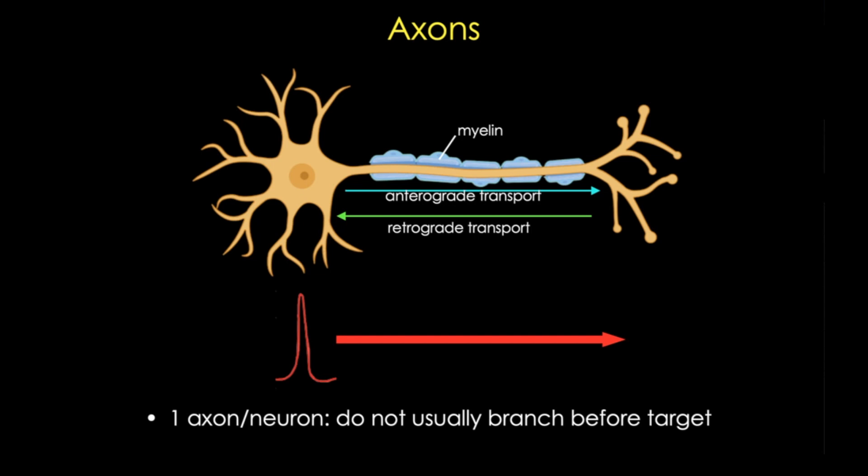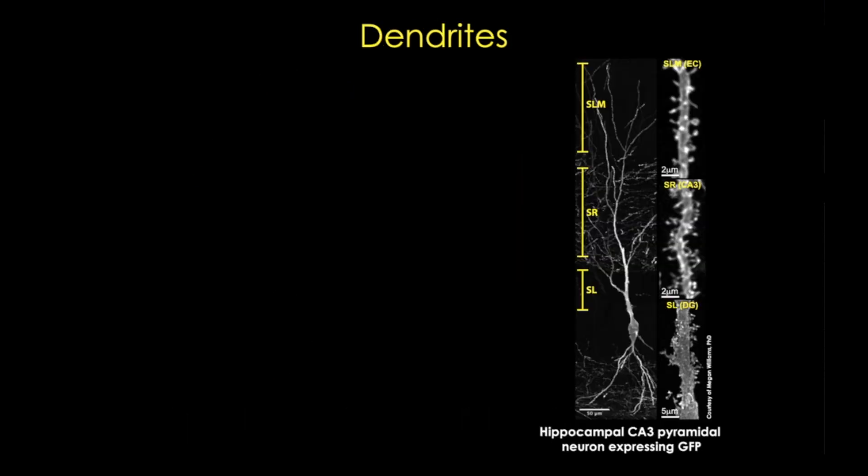The last major component is the dendrite, and here I'm showing a pyramidal neuron of the hippocampus expressing GFP, and you can note the triangular cell body and the extensive dendritic tree.